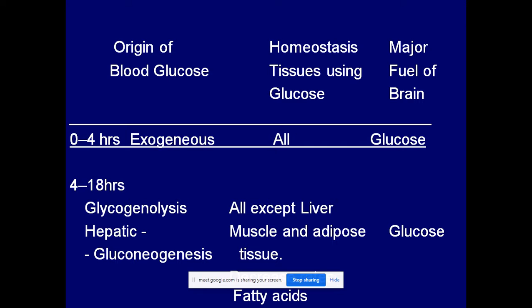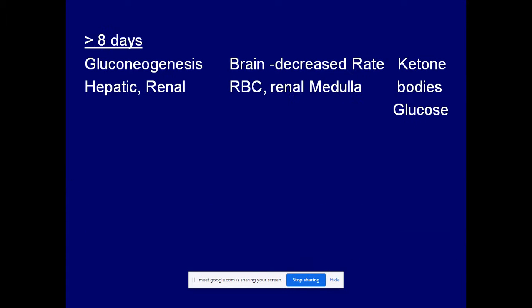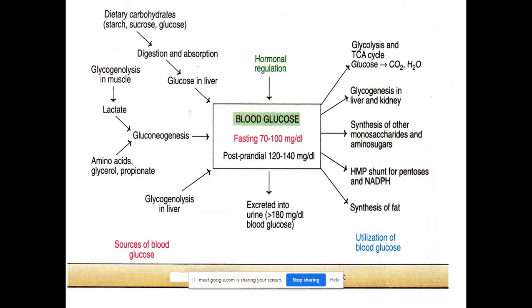Now let us look at the origin of blood glucose homeostasis. Looking at this diagram, you can see how blood glucose enters the circulation and how it is utilized. Dietary carbohydrates — starch, sucrose, and glucose — undergo digestion, are absorbed in the intestine, and the glucose absorbed reaches the liver, from where it enters the blood circulation.